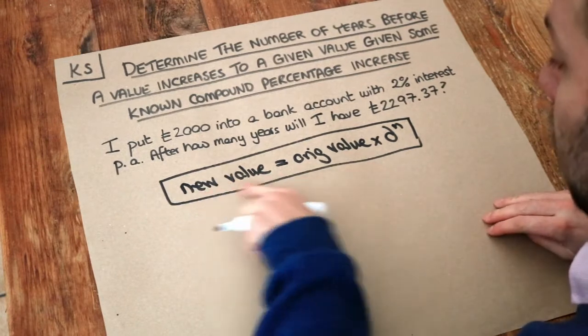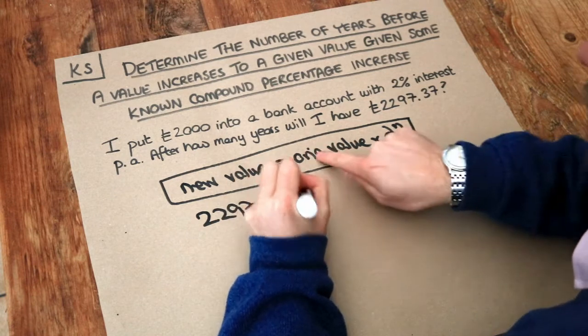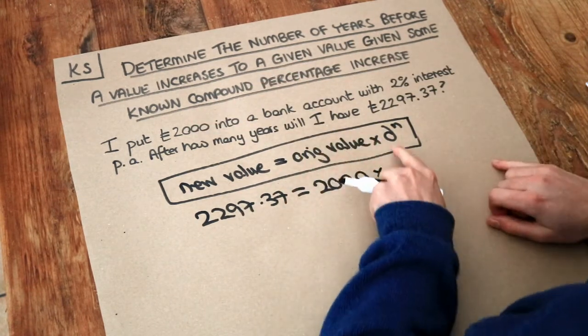So let's fill in our values. Our new value is 2297.37, the original value was 2000, we're multiplying by d to the power of n.